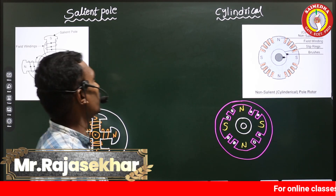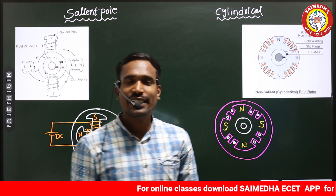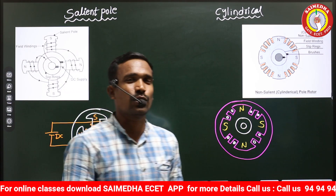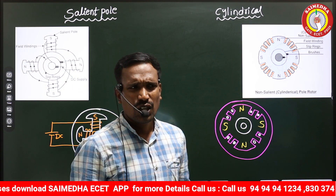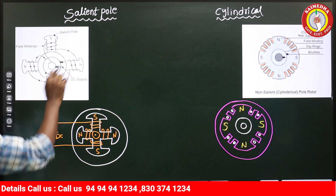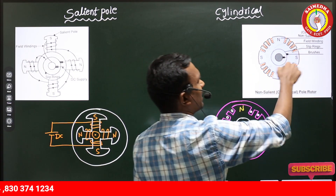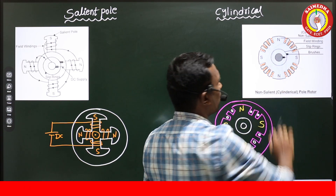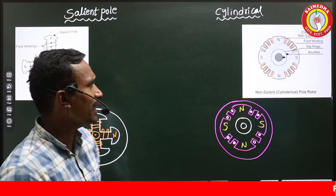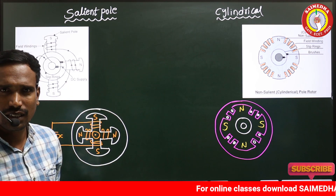In this video we are going to discuss the differences between salient pole and smooth cylindrical (non-salient pole) synchronous rotors. This is a salient pole structure — these are the poles projecting outside. And this is a smooth cylindrical structure — there is no saliency because there are no salient poles here.